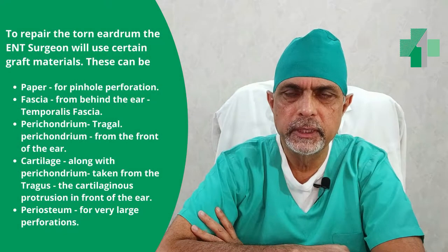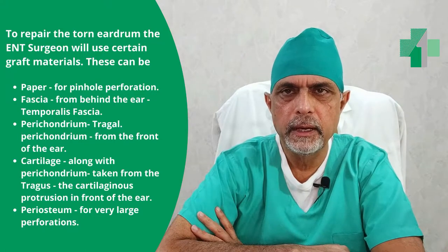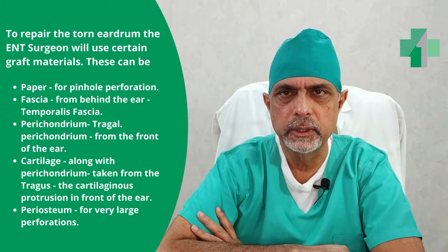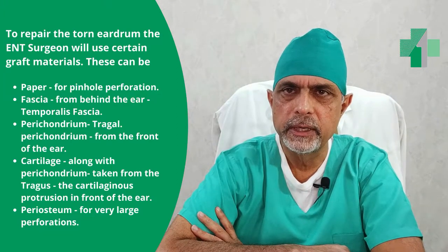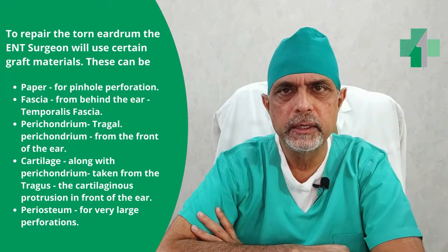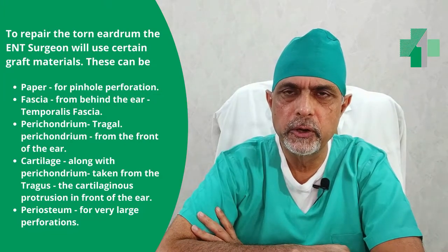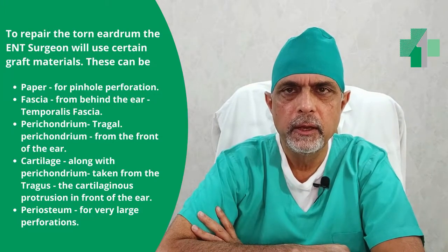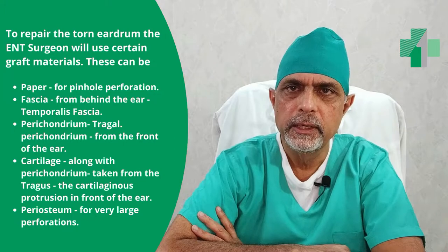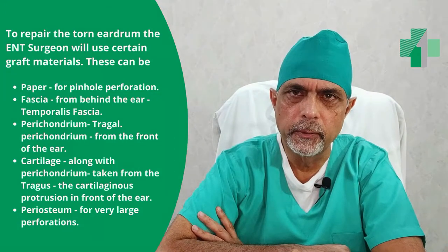Myringoplasty में हम तरह-तरह के material यूज़ करते हैं — कभी-कभी paper, या ज़्यादातर graft material. Graft material में सबसे ज़्यादा common है temporalis fascia या tragal perichondrium. ये दोनों patient की body से उनके अपने tissue होते हैं, जो उसी operation के time निकाले जाते हैं और torn eardrum को repair करने के लिए इस्तेमाल किए जाते हैं.